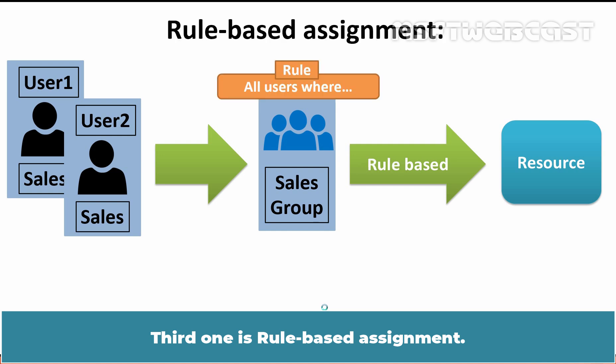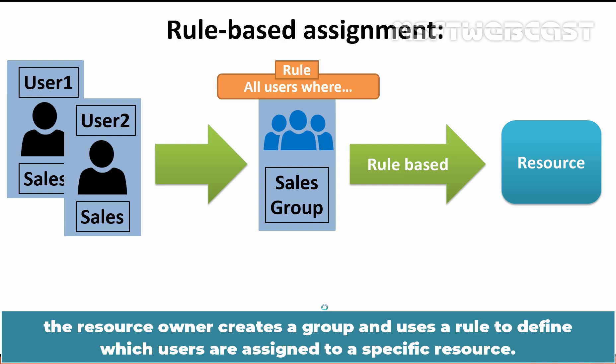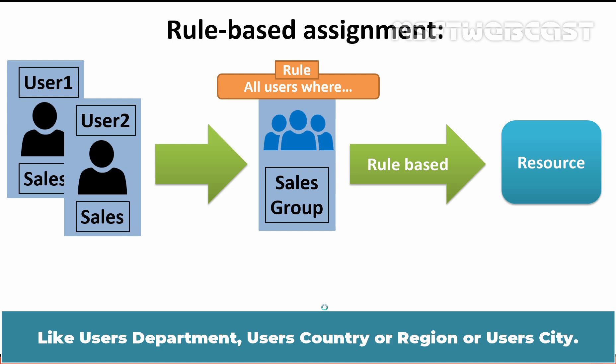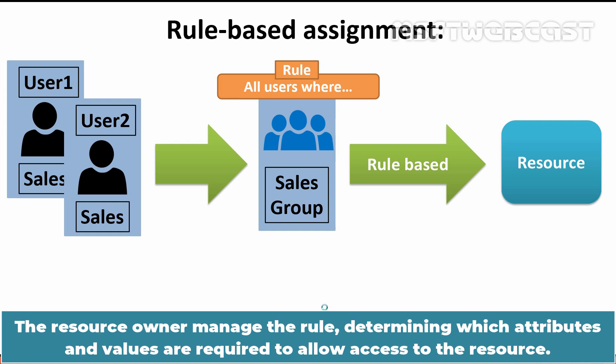The third one is Rule Based Assignment. The resource owner creates a group and uses a rule to define which users are assigned to a specific resource. The rule is based on attributes assigned to individual users, such as department, country or region, or city. The resource owner manages the rule, determining which attributes and values are required to allow access to the resource.